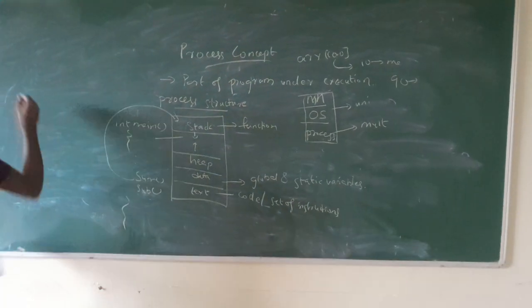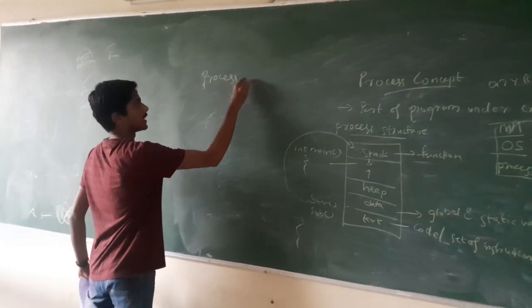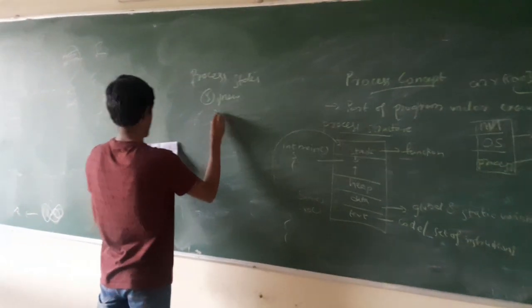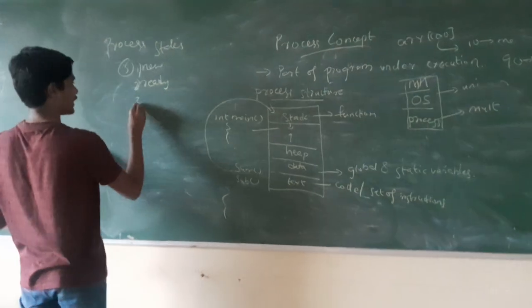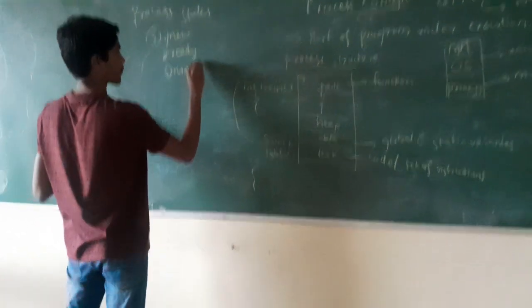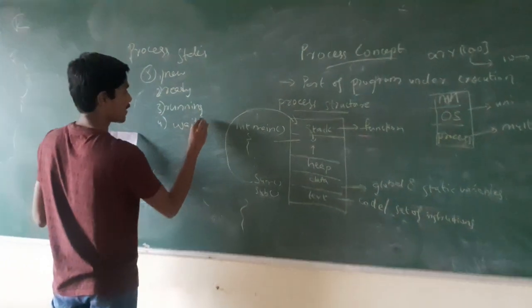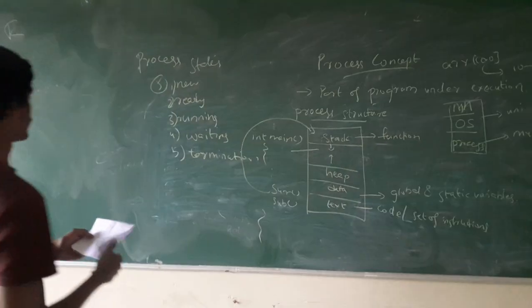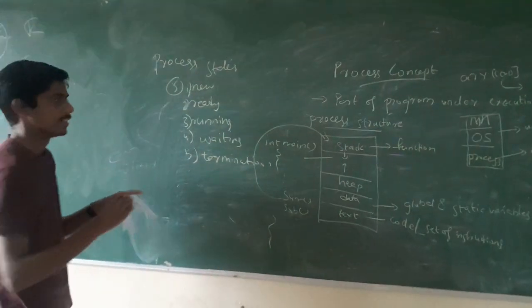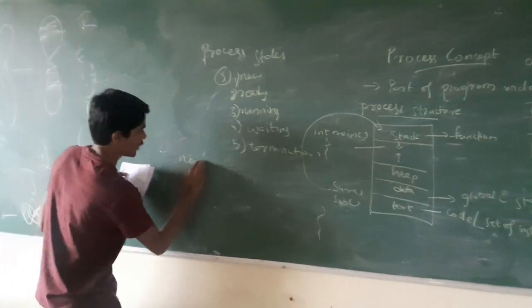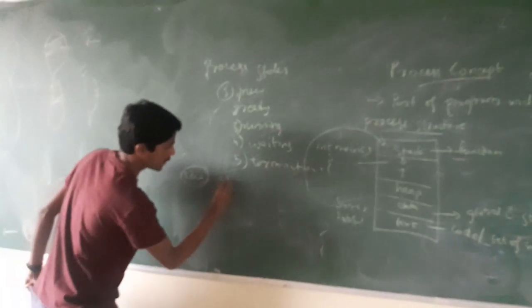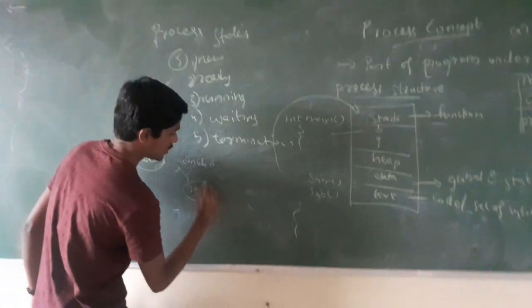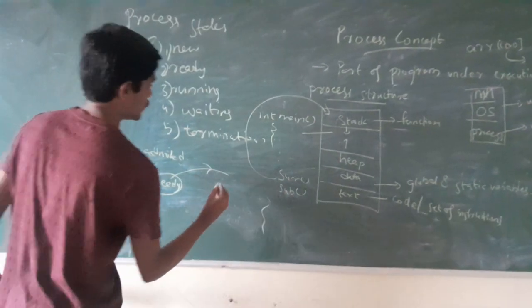What are the number of states in a process? There are basically five states. The first one is the new state. The second one is the ready state. The third one is the running state. The fourth one is the waiting state. The fifth one is the terminated state. Whenever a process is created, it will be in the new state. Then the process is activated into the ready state, where it is ready for execution. The scheduler selects the set of instructions and then the process enters into the running state.